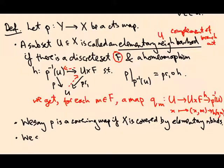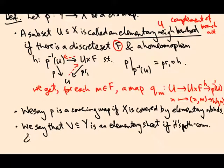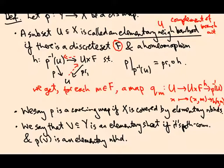I'm going to introduce one more piece of notation and definition. We're going to say that a subset V of Y is an elementary sheet - this is going to be helpful to have this terminology later. It's going to be path connected and p(V) is an elementary neighborhood.